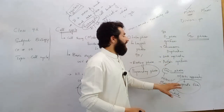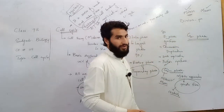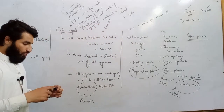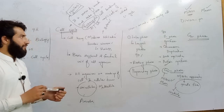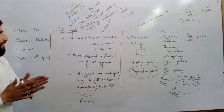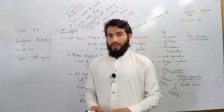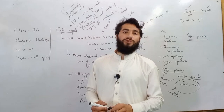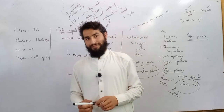So this was all about the cell cycle, which consists of two phases: interphase and the division phase. Interphase consists of three further sub-phases: G1 phase, S phase, and G2 phase. This is the end of the cell cycle, and inshallah in the next class we will discuss mitosis. Thank you.